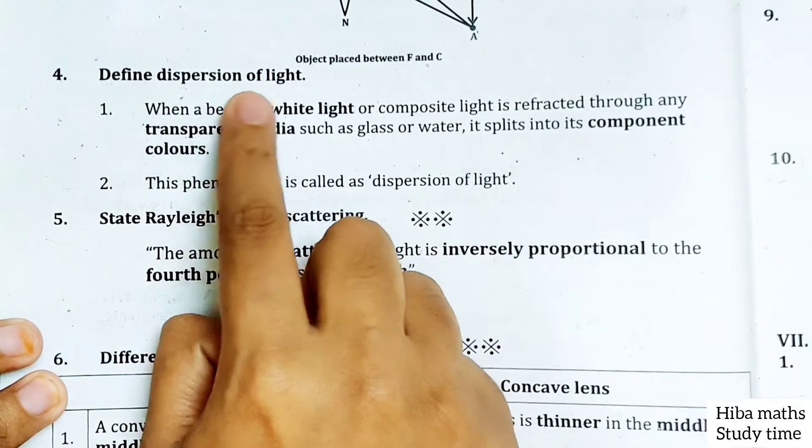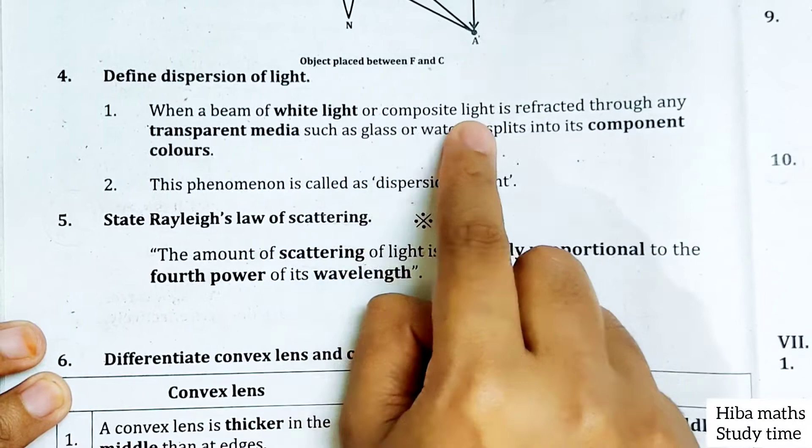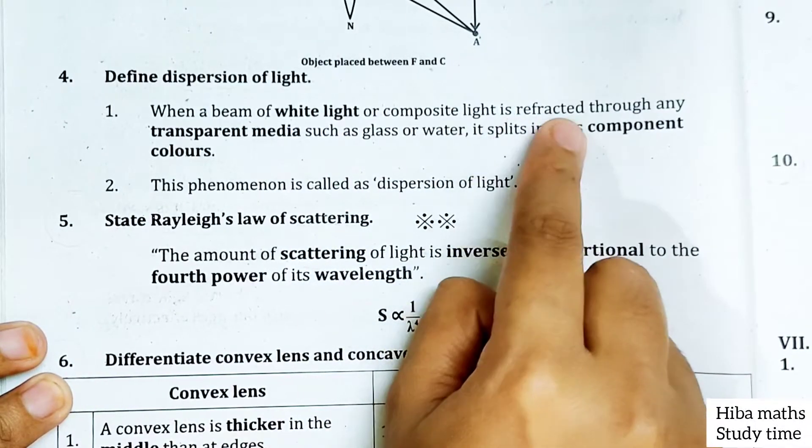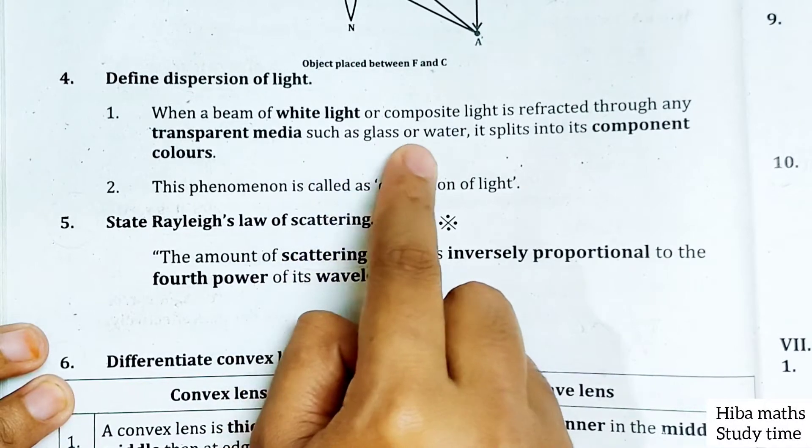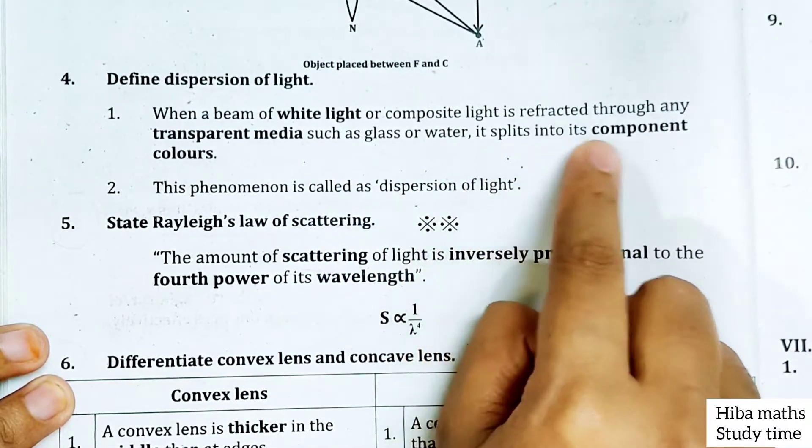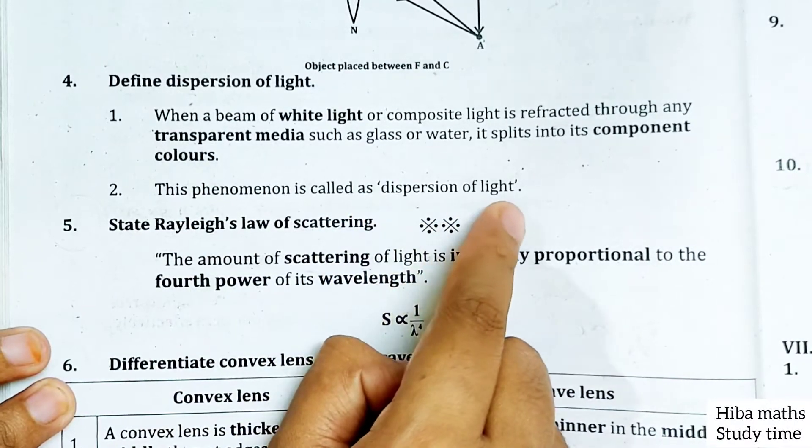Define dispersion of light. When a beam of white light or composite light is refracted through any transparent media such as glass or water, it splits into component colors.